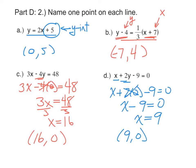So when it's in slope-intercept form or point-slope form, you can just pull the point right out of the equation. When it's in any of the other forms, just plug 0 in for something and find a point.